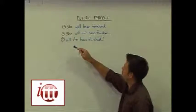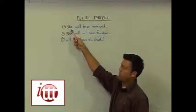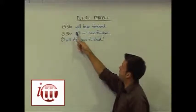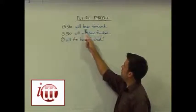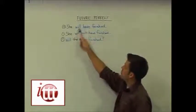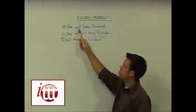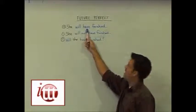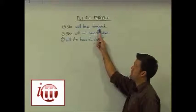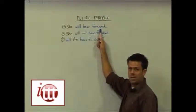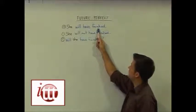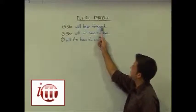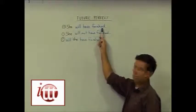Here we have for our positive form, our subject. In general, we're using the pronoun she here. So she will have finished. We're using the word will to indicate the future, our helping verb or auxiliary verb have, and the past participle form of the main verb. In this case it's finish which we've conjugated as finished. She will have finished.